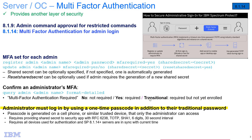The administrator must log in using not only their traditional password, but also the six-digit token generated from the shared secret. To generate this six-digit code, you need to use an application supporting RFC 6238, which uses TOTP — a time-based code generator. It must use SHA-1, generate a six-digit code, and have a 30-second interval. Also note that the devices generating the code and the Spectrum Protect 8.1.14 and above servers must be in sync with the current time.